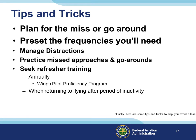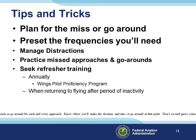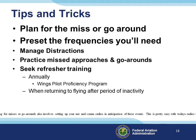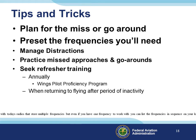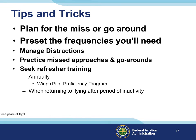Here are some tips and tricks to help you avoid a loss of control accident. Plan to miss or go around: brief the missed approach or go-around for each and every approach. Know where you'll make the decision and execute at that point — don't second-guess yourself. Pre-set the frequencies you'll need: planning for missed approaches or go-arounds also involves setting up your nav and com radios in anticipation of these events. Even if you have one frequency to work with, list the frequencies in sequence on your kneeboard or scratch pad so you won't have to go searching for them in a high-workload phase of flight.